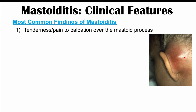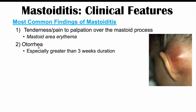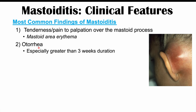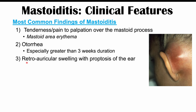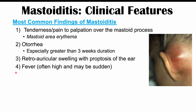The mastoid area can become erythematous, or reddened in appearance. Another common finding is otorrhea — drainage from the ears — particularly when it is chronic and has lasted at least three weeks, which may indicate a more severe underlying condition. Retroauricular swelling, or swelling behind the ear with proptosis of the ear, may actually push the ear forward. Fever, often high and of sudden onset, can also be present. The ear pain in mastoiditis is described as deep or behind the ear and often is not worse at night.